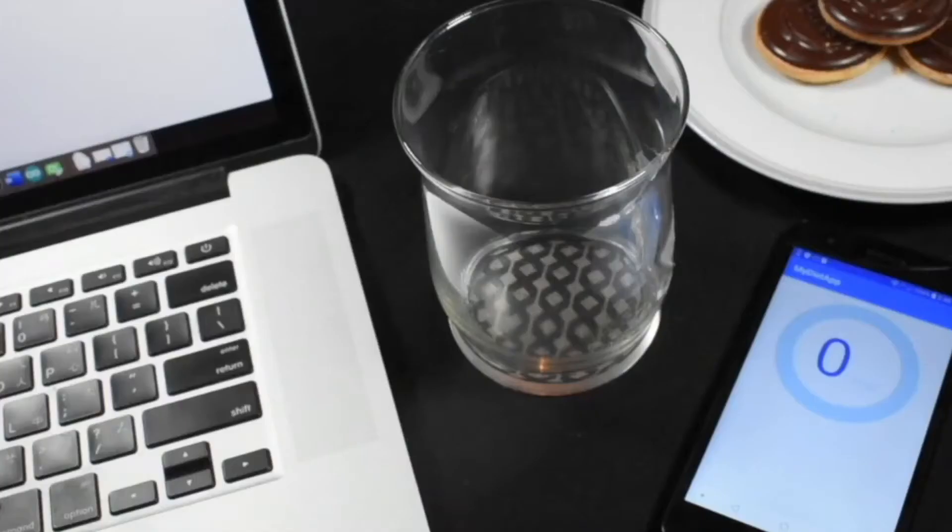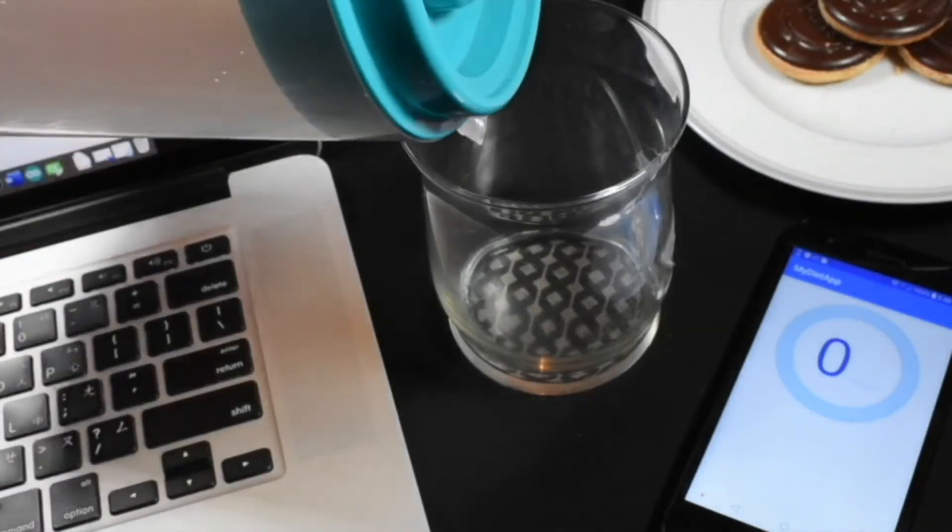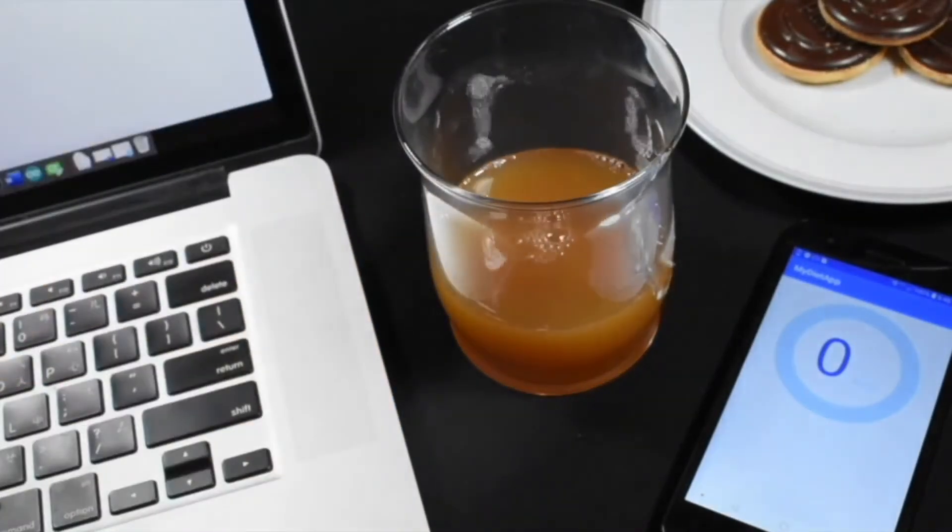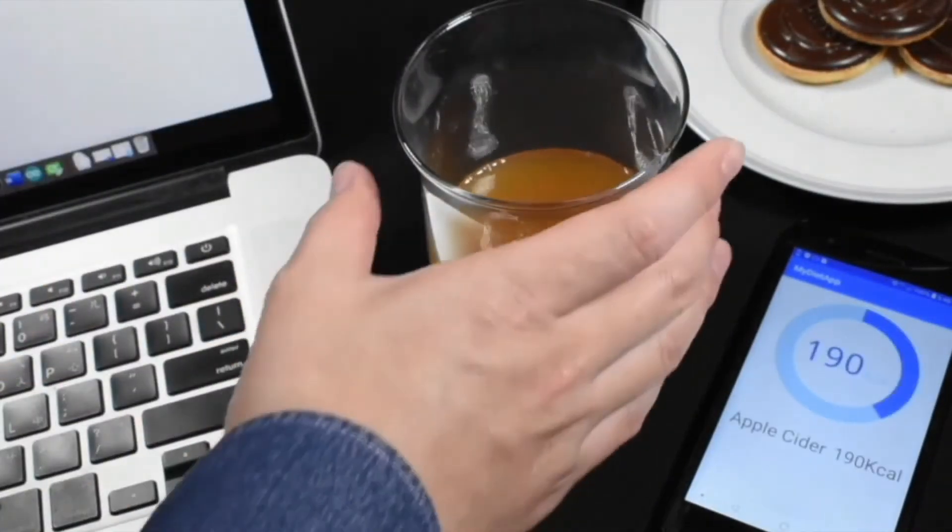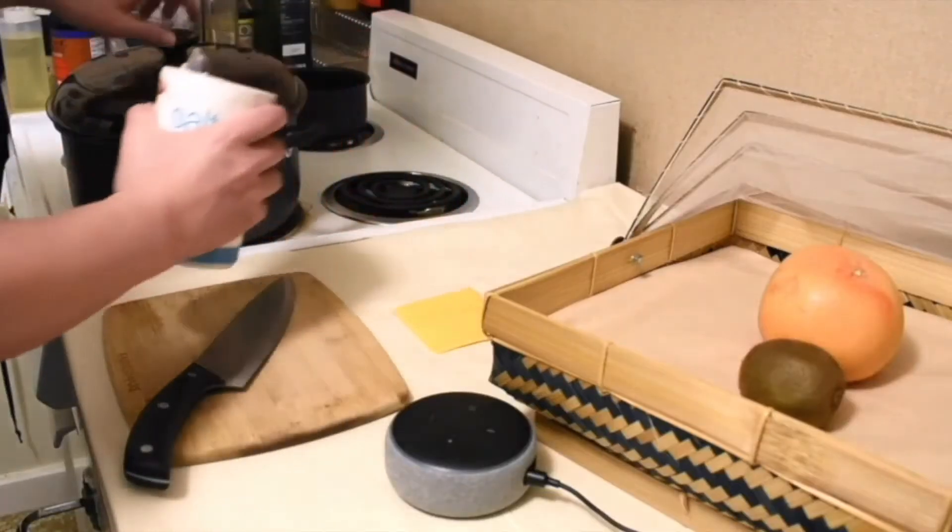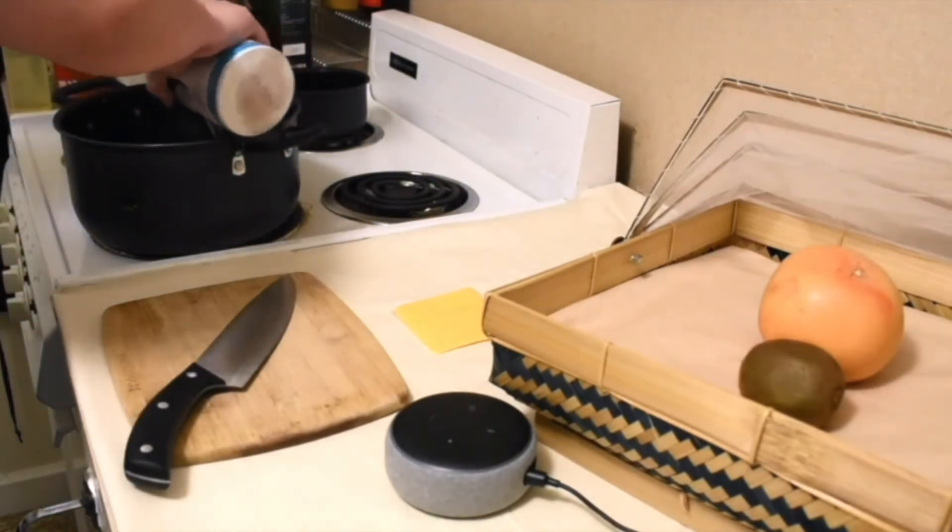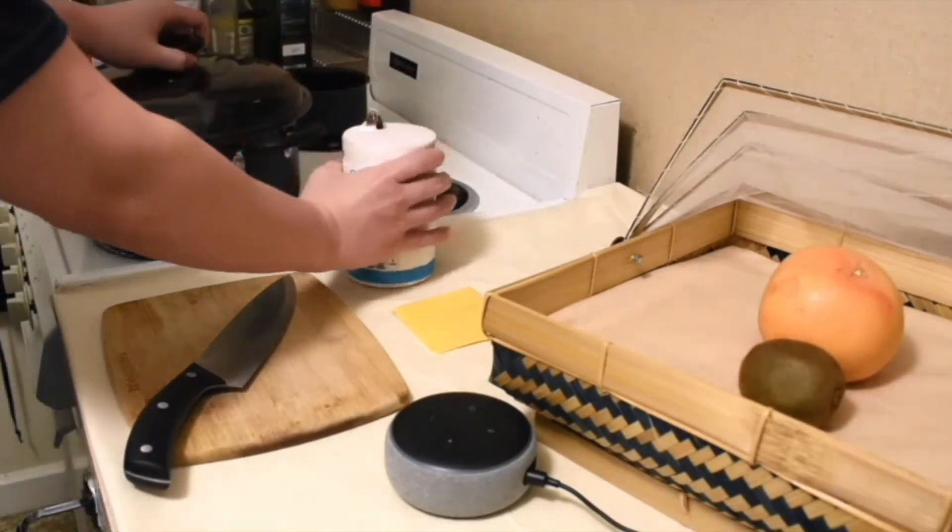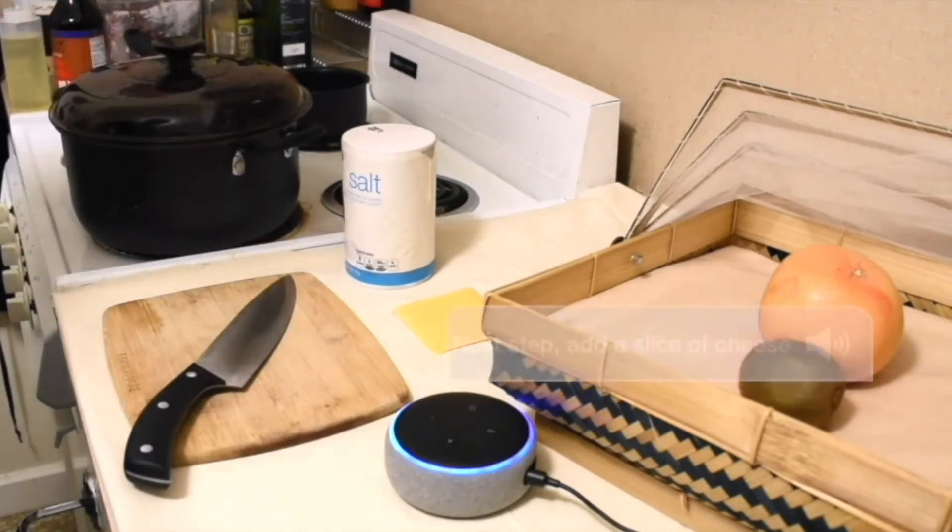And as many everyday objects around us are made or covered by fabric, there are numbers of applications that are enabled by our sensing technique, such as turning a closet into a data tracker with our smart textile, or a smart tablecloth for recipe helper. Next step, add a slice of cheese.